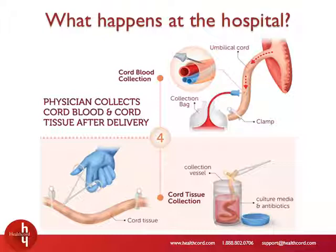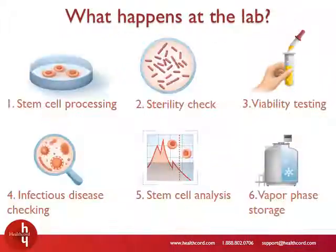Once the baby is born and the umbilical cord is cut according to the birth plan of the mom, the healthcare provider can collect the leftover blood in the umbilical cord and the cord itself. Everything you need for these steps, from the collection bags to storage vessels, is included in the kit. In the lab, cord blood and cord tissue samples go through several different screening steps. Once this is done, the samples get cryogenically preserved and stored in vapor-phase storage tanks, where they will remain for the lifetime of a baby or until they become necessary.